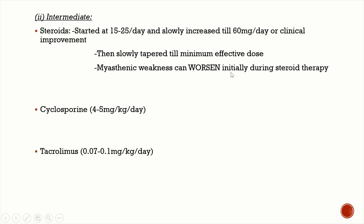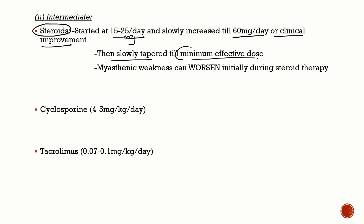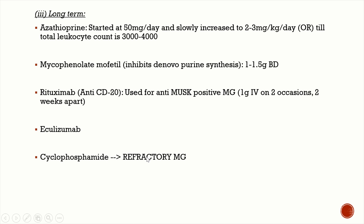Intermediate immunotherapy: steroids should be started at a low dose of 15–25 mg/day, slowly increased to 60 mg/day until clinical improvement, then tapered to the minimum effective dose. Due to steroid complications (glaucoma, cataracts, hypertension, diabetes, peptic ulcer), steroid-sparing agents may be needed: cyclosporine 4–5 mg/kg/day or tacrolimus 0.07–0.1 mg/kg/day.